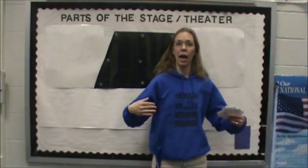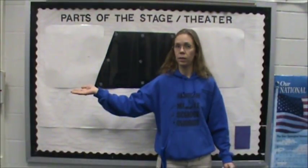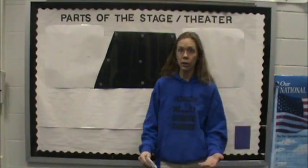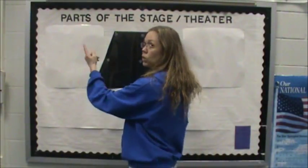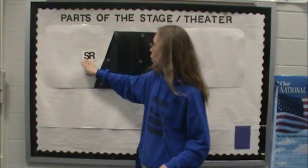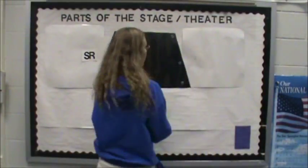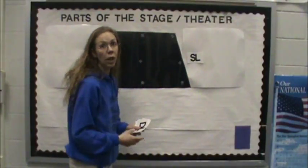If you're standing as an actor on the stage, this would be the right side of the stage and this side would be the left side of the stage. Even though from an audience's point of view you're looking at the left side, this is actually stage right because as an actor when you're standing on the stage, this is stage right. So we're going to label this as SR or stage right. On this side, we're going to label it as SL or stage left.